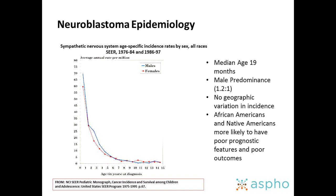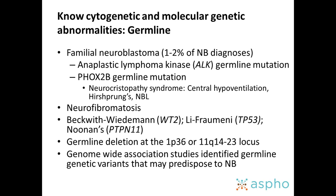There doesn't appear to be any ethnic predisposition, although studies now show that African Americans and Native Americans do worse overall. The board wants you to know the cytogenetic and molecular genetic abnormalities for these tumors as well as the renal tumors. I divide these into germline genetic abnormalities and somatic abnormalities. For neuroblastoma, the most important are familial neuroblastomas — a syndrome well reported for decades, occurring in about 1% to 2% of neuroblastomas, but the genetic predisposition was only identified in the last 15 years.